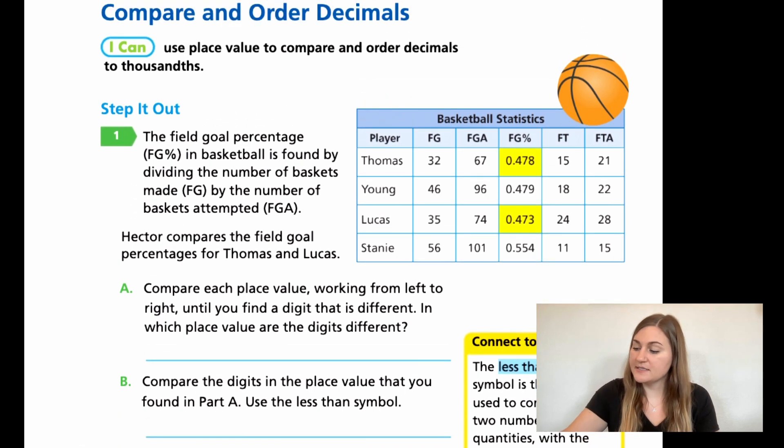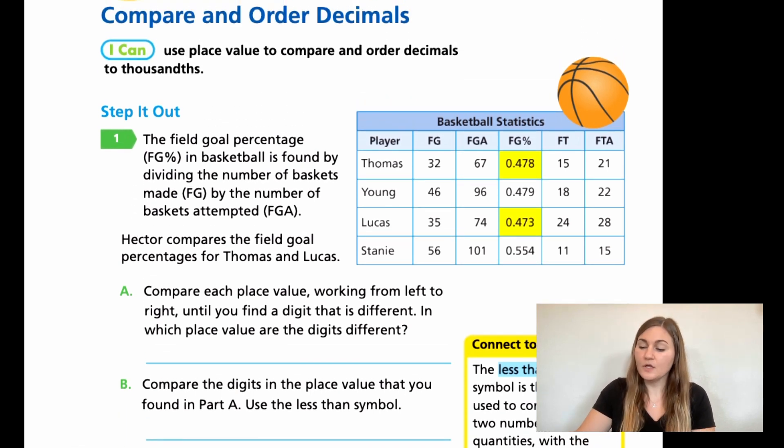So moving into the lesson, we're on page 331. We have a step it out. The field goal percentage marked as FG percentage in basketball is found by dividing the number of baskets made, FG, by the number of baskets attempted, FGA. So Hector compares the field goal percentages for Thomas and Lucas, and those are highlighted in yellow. For A, it says compare each place value, working from left to right until you find a digit that is different. In which place value are the digits different?